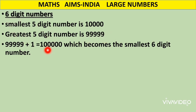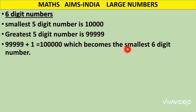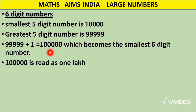The number that comes after 99,999 will be more than a five digit number. We find it by adding 1 to 99,999, which gives us a six digit number: 1 followed by five zeros, which becomes the smallest six digit number. This number is read as one lakh.